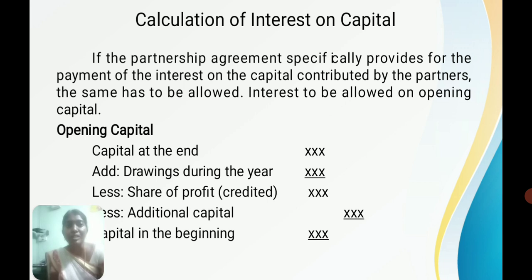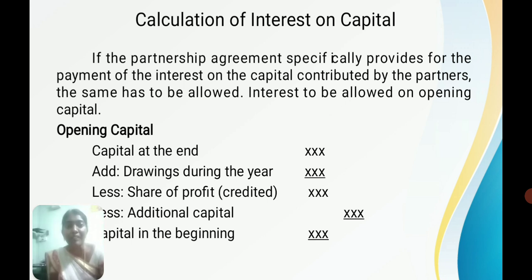Next, we will see how to calculate interest on capital. Of the 5 entries in the Profit and Loss Appropriation Account, interest on capital and interest on drawings must be calculated separately before entry. Interest on capital is paid by the firm to the partners, and it is calculated on the opening capital. The opening capital is found as: closing capital plus drawings during the year, less share of profit, less additional capital brought in.